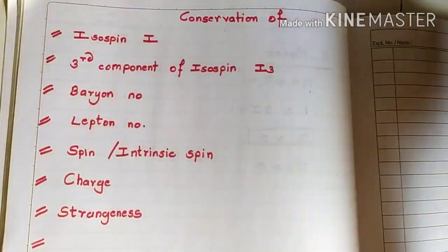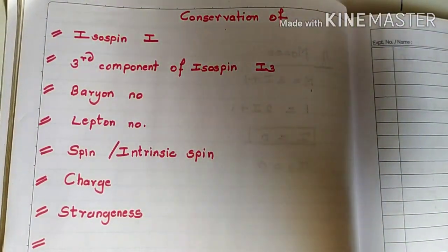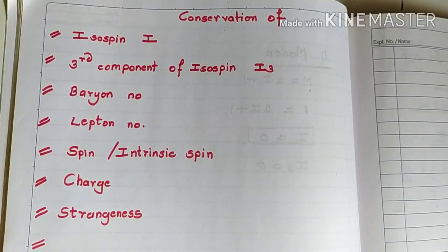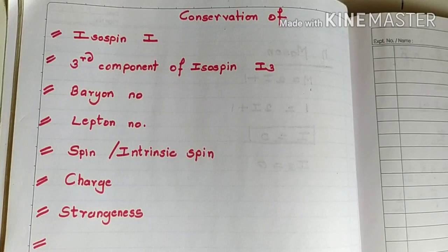Hello everyone. In the previous video we understood about two quantum numbers: isospin and third component of isospin. In today's video we are going to understand the rest of the nuclear quantum numbers. Let's start by checking whether the homework I had given in the previous video is correct — I told you to derive isospin and third component of isospin for hyperons.